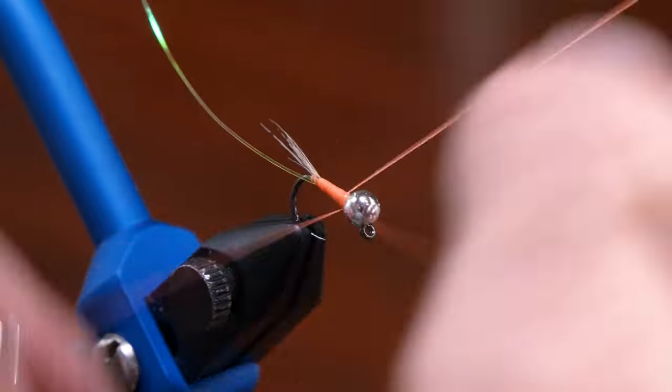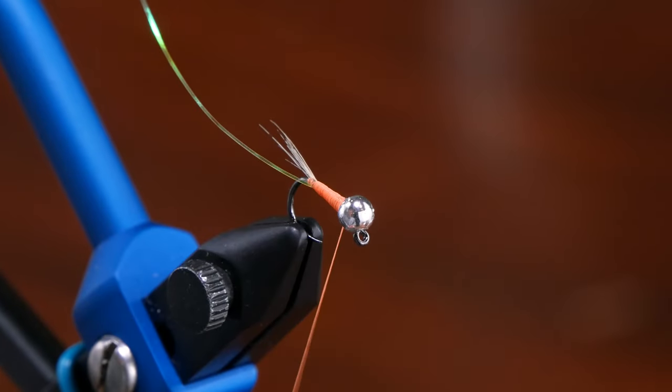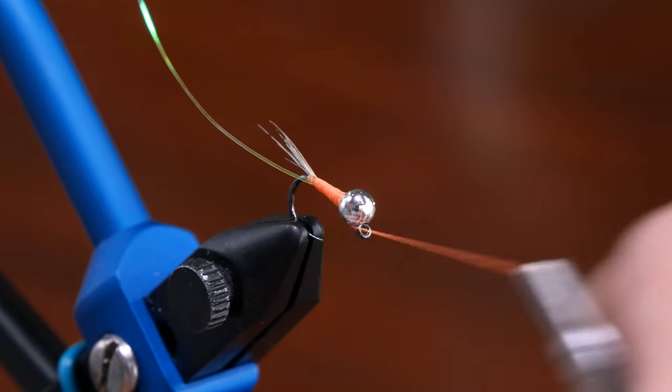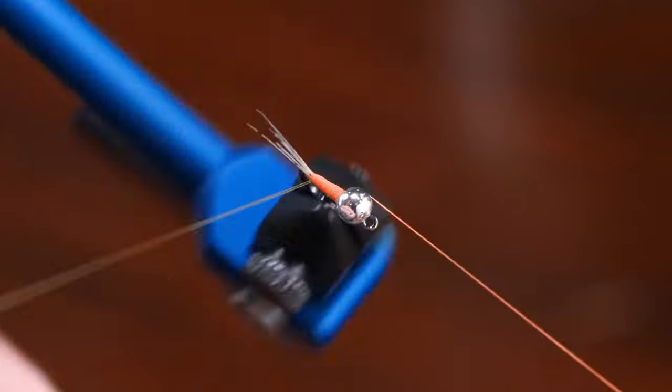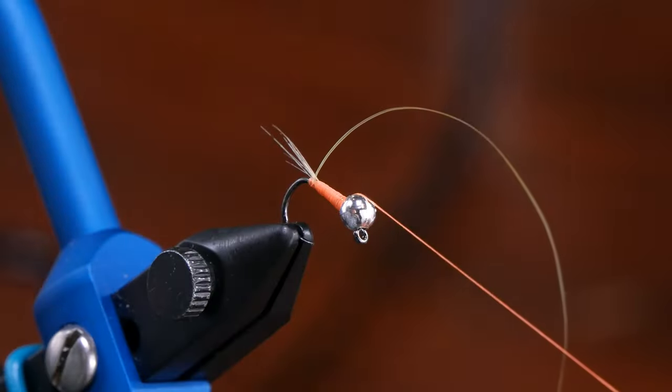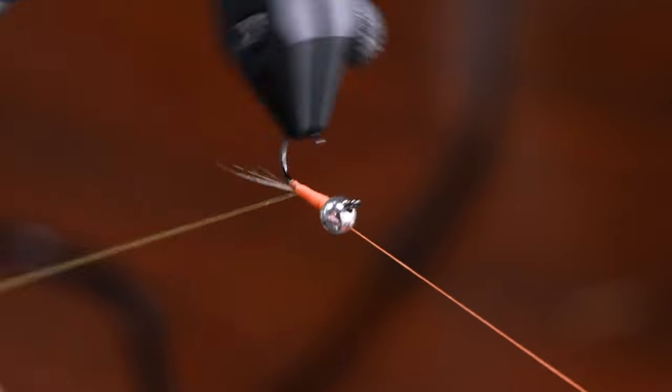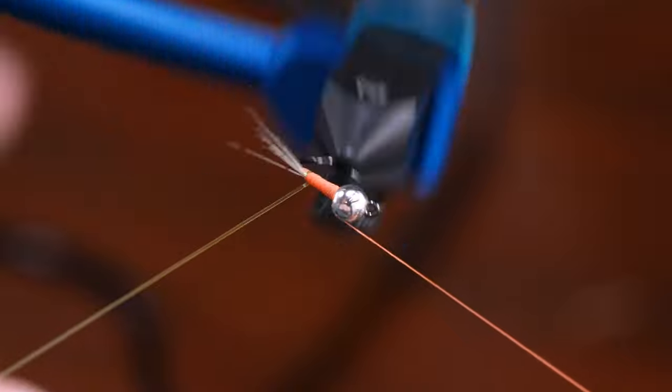Now we'll wrap up the front and get ready to tie the flash in. You can half hitch here just behind the bead. You can certainly take this and wrap it around using your rotary vise, which can be an extremely easy way to do this.